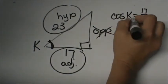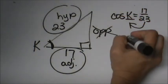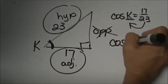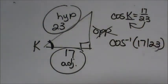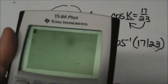So we're going to use our inverse button to look for the angle measure. So I'm going to take cosine to the negative 1 or the inverse cosine of 17 over 23 and let's crank that out and see what our angle measure is. Grab your handy dandy calculator.